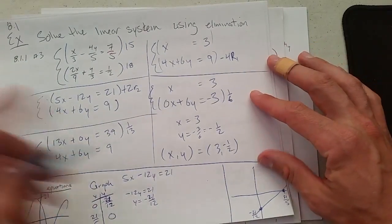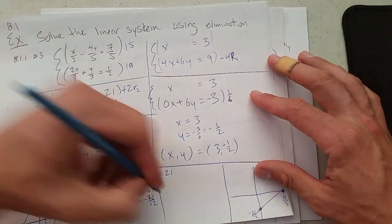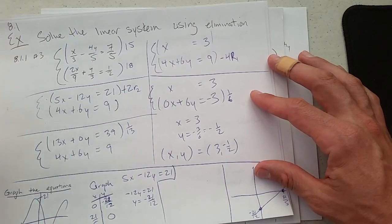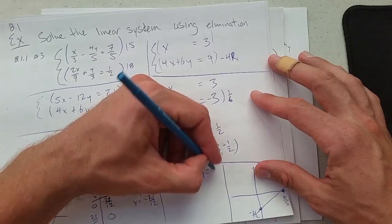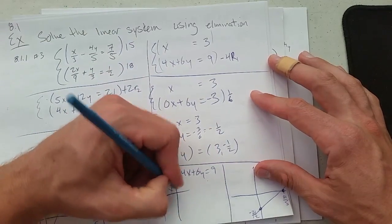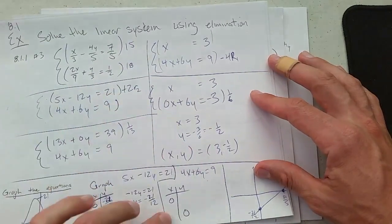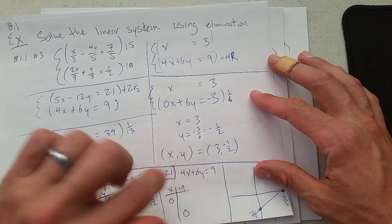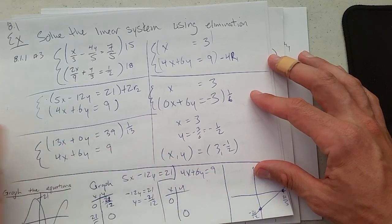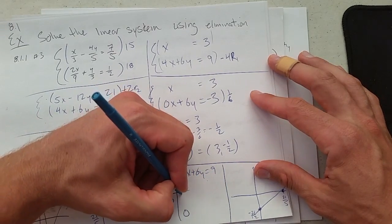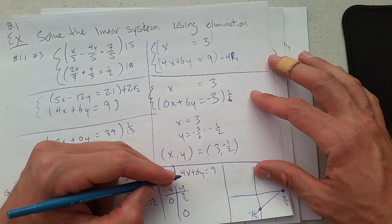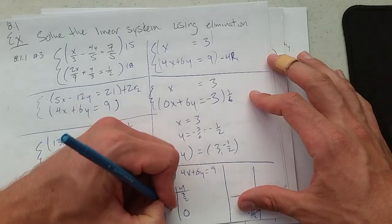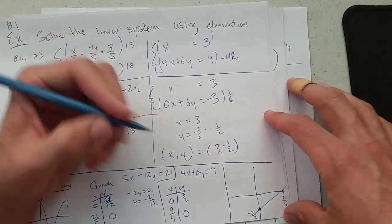Now graph the other equation—it's nicer. We're graphing 4x plus 6y equals 9. Same approach: when x is 0, 6y equals 9, so y is 3/2. When y is 0, x is 9/4.